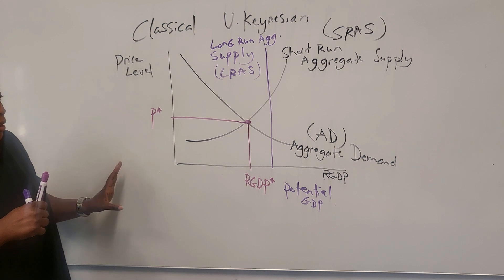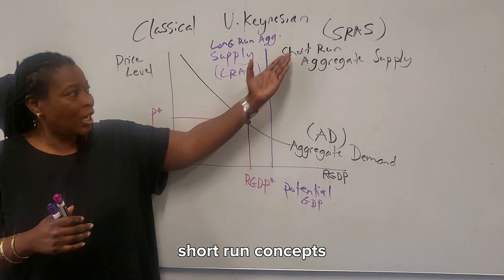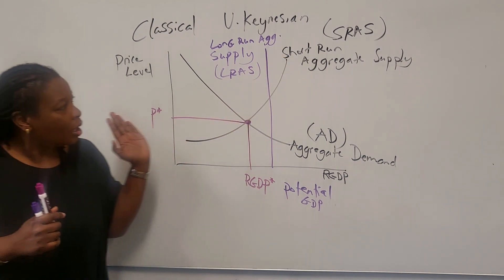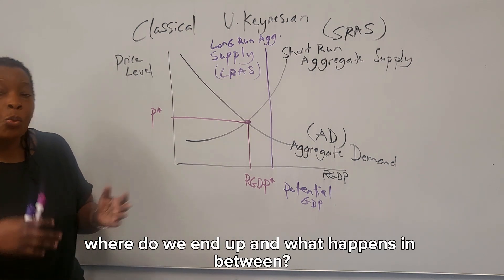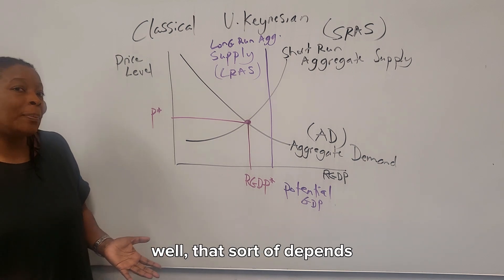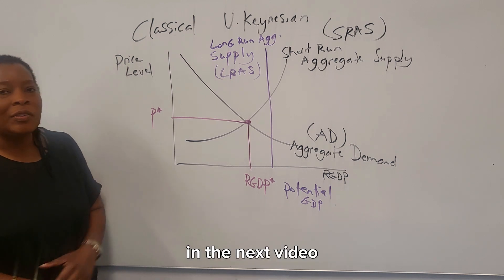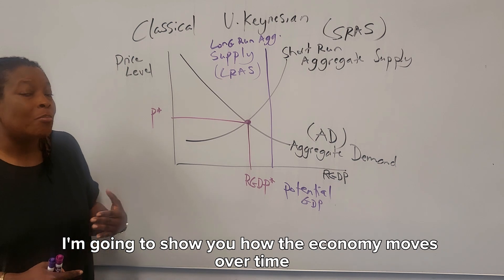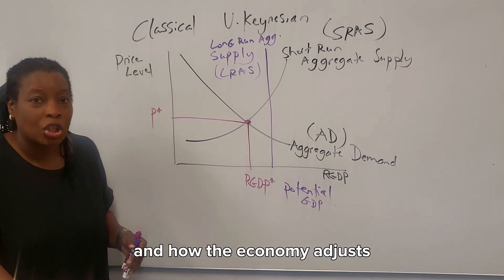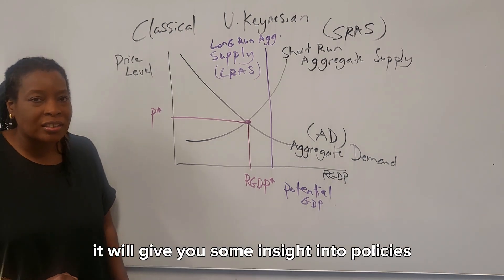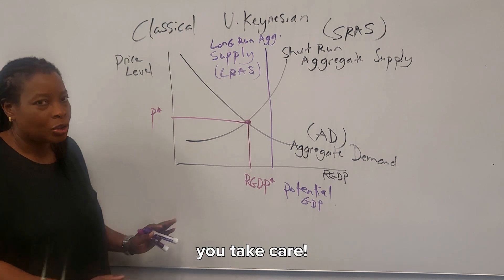On this one graph we have all of our concepts together. When we visualize how the economy works, this helps us out: short-run concepts reflect Keynesian economics, and long-run concepts reflect classical economics. In the next video I'm going to show you how the economy moves over time, the fluctuations that can happen, and how the economy adjusts — which will give you some insight into the policies you see happening. Until next time, take care.